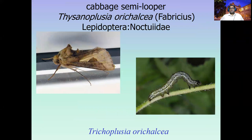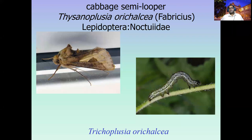Last class we were discussing the majority of the pests attacking cruciferous vegetables — we call it the caterpillar complex. In that series, another caterpillar species is called the cabbage looper, Trichoplusia ni, and another species is Trichoplusia orichalcea, sometimes called Plusia peponis. It belongs to the order Lepidoptera.